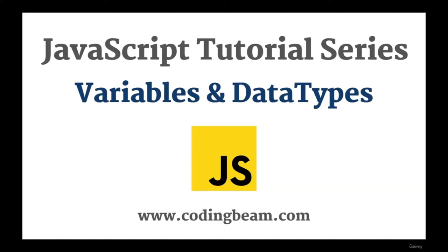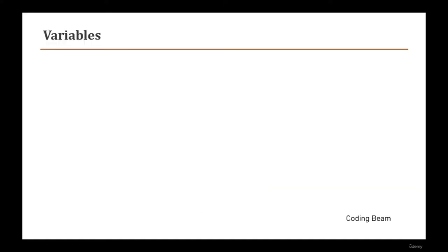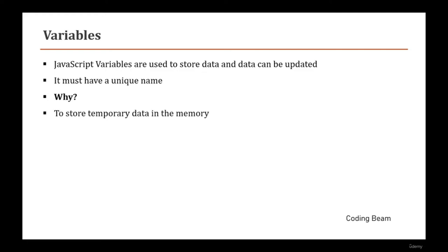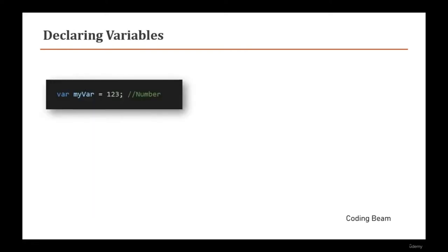In this video we are going to discuss JavaScript variables and data types. JavaScript variables are used to store data in memory, which can later be updated. There should always be a unique name for variables. We need them to store temporary data in memory, which is deleted after program execution, and to perform various calculations and operations.